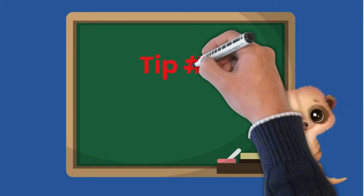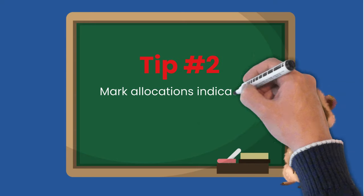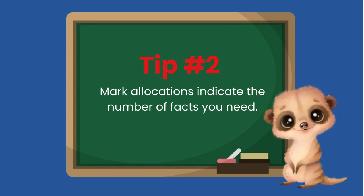Another important tip to remember is tip 2. Mark allocations indicate the number of facts you need. If there are two marks, that means you need to give two facts.